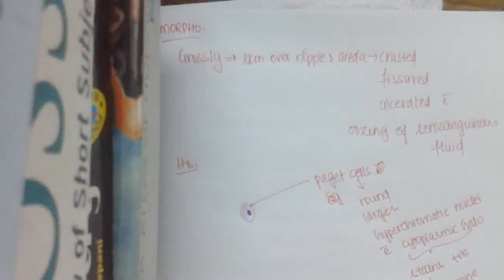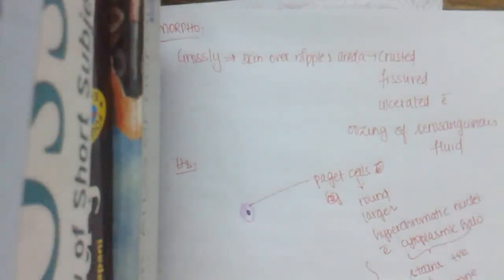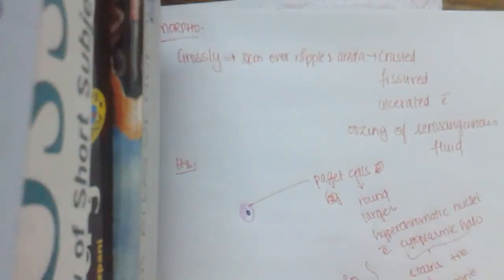The Paget cells are adenocarcinomatous in type. We can say this because the Paget cells stain positive with mucicarmine staining, indicating that they contain mucin. This mucicarmine positivity confirms that they are a type of adenocarcinoma.